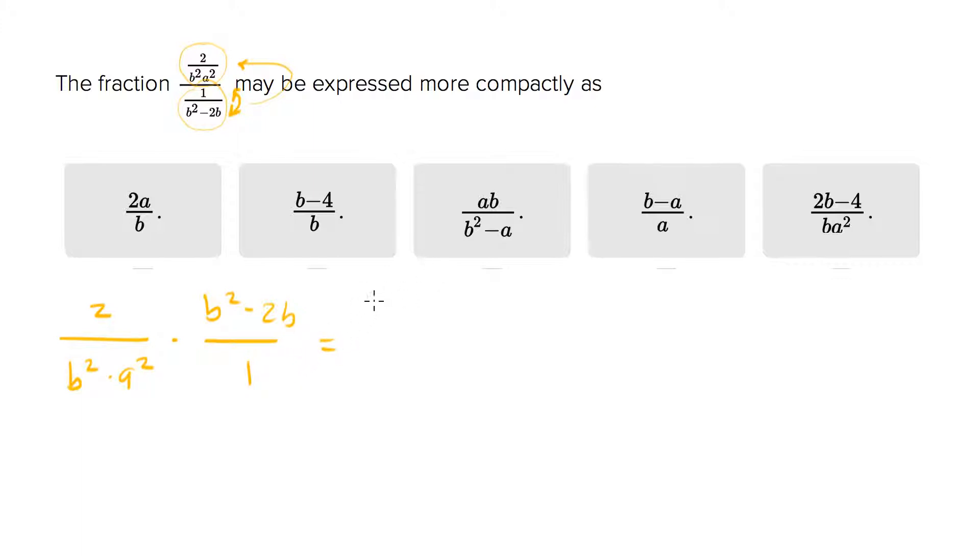So that is 2b squared minus 4b over b squared times a squared.